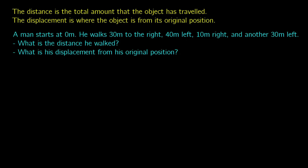Let's talk about distance, displacement, and velocity. Distance is going to be how far you've gone in total for some certain time period, and displacement is going to be where you end up compared to your original position. So two different measurements.